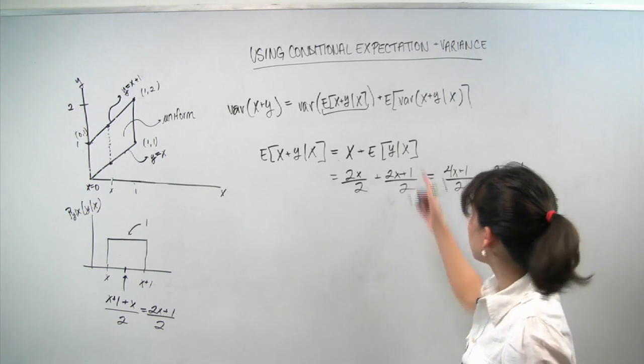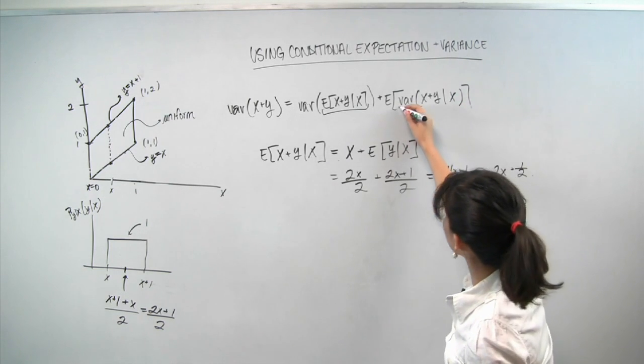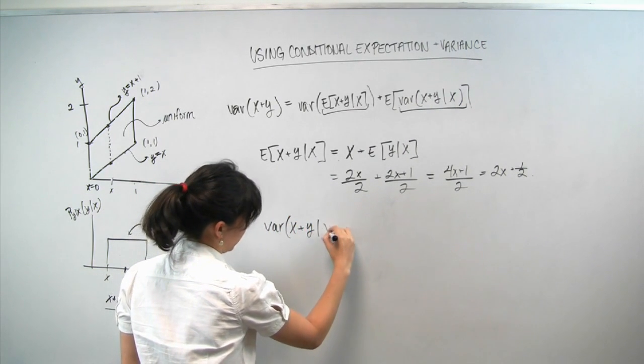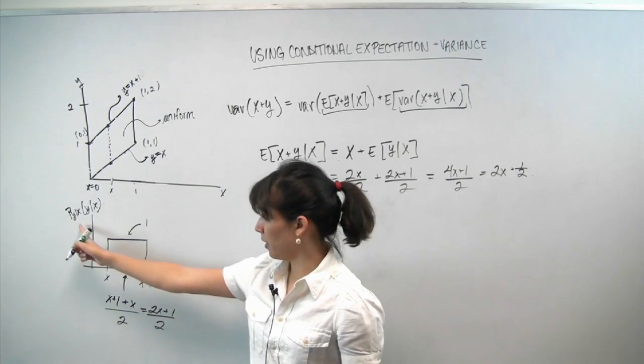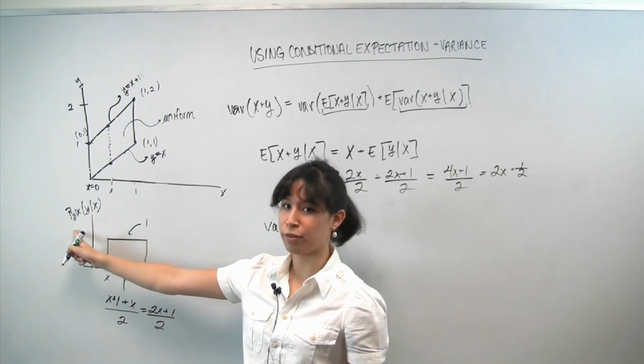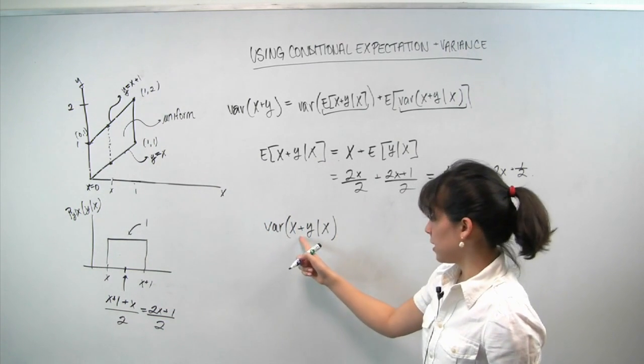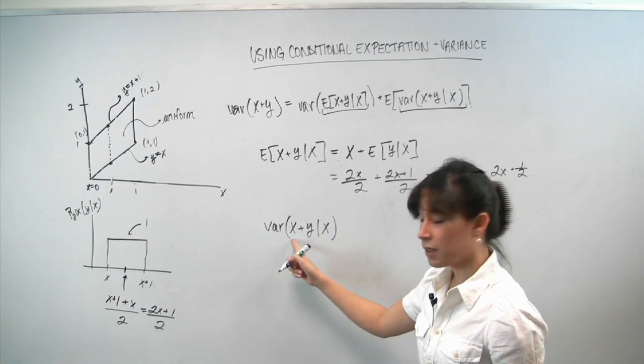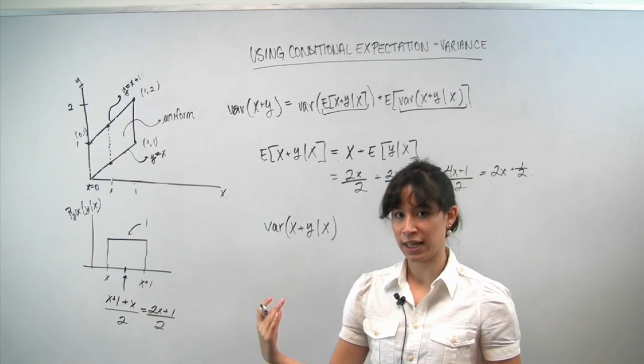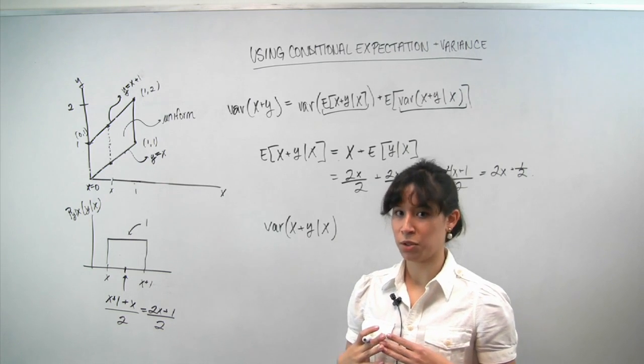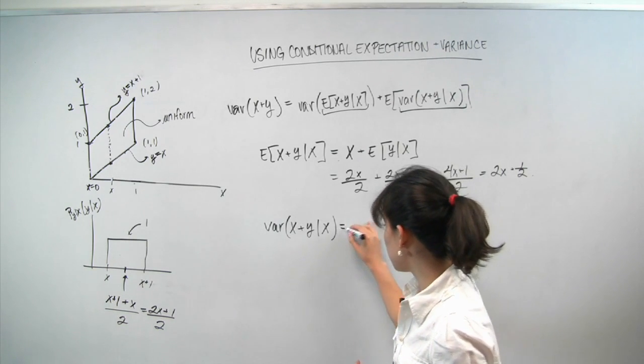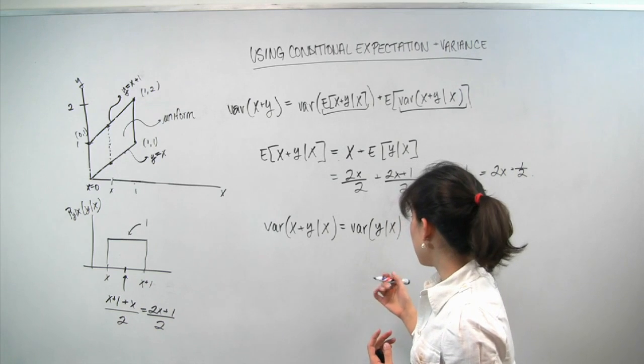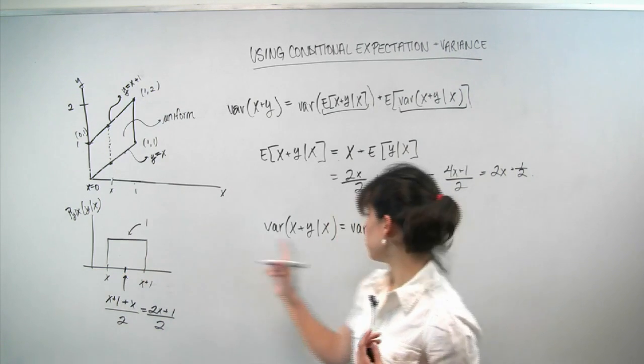So now I want to look at the next term, the next inner term, which is this guy. So this computation is going to be very similar in nature, actually. So we already discussed that the conditional PDF of y given x is this guy. So the variance of x plus y conditioned on x, we sort of have a similar phenomenon occurring. x, now in this conditional world, just acts like a constant that shifts the PDF, but doesn't change the width of the distribution at all. So this is actually just equal to the variance of y given x, because constants don't affect the variance. And now we can look at this conditional PDF to figure out what this is.